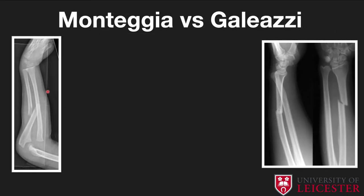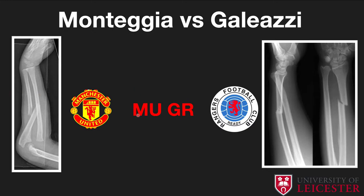A useful mnemonic is remembering Man United and Glasgow Rangers: the Monteggia fracture, starting with M, typically has an ulnar shaft fracture; the Galeazzi fracture typically has a radial shaft fracture. For Monteggia you get radial head dislocation proximally, whereas for Galeazzi the distal radial ulnar joint is disrupted. On the lateral projection you can appreciate the volar displacement of the ulnar bone.